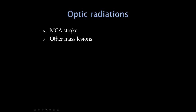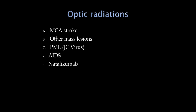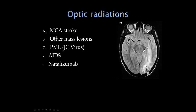Getting back to the optic radiations: the middle cerebral artery supplies them, so frequently we'll have contralateral homonymous hemianopsia with an MCA stroke. Any mass or tumor involving the optic radiations can cause this visual field deficit. Two others worth mentioning: PML — progressive multifocal leukoencephalopathy — related to the JC virus in conditions of immunosuppression, especially AIDS. Certain medications can also cause this; the one for neurology to know is natalizumab, a very effective medication for multiple sclerosis. PML usually starts in the posterior white matter, in the optic radiation, so early symptoms tend to be contralateral visual loss.